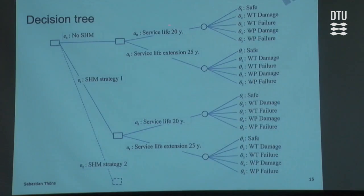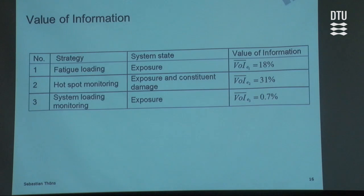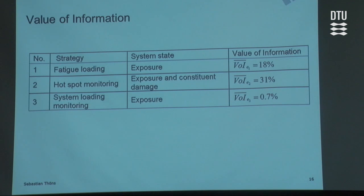Action A0 is service life of 20 years as designed, and A1 is service life extension to 25 years. Then we have the system states — the overlap with the framework: a safe state, wind turbine damage or failure, and wind park damage or failure. When we analyze this decision tree, we can quantify the relative value of information: SHM strategy one is 18%, strategy two is 31%, and strategy three is 0.7%.